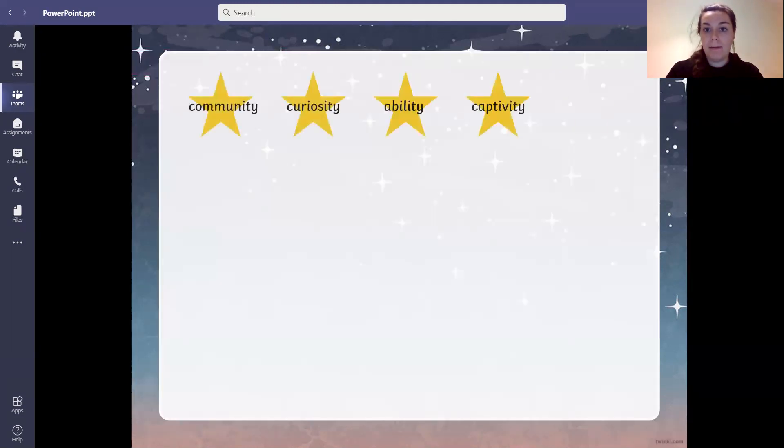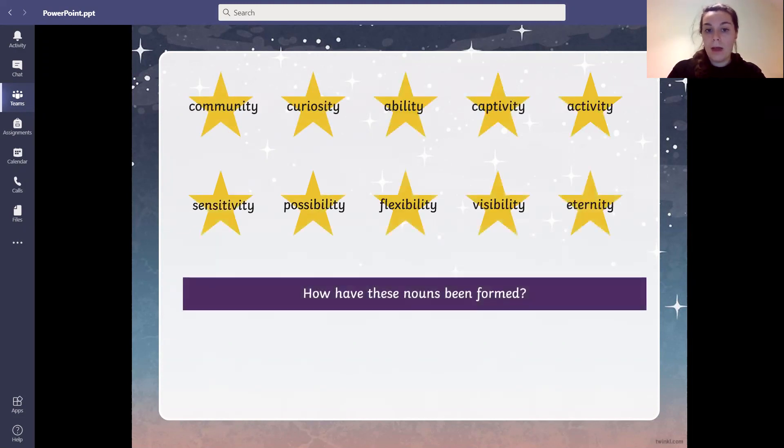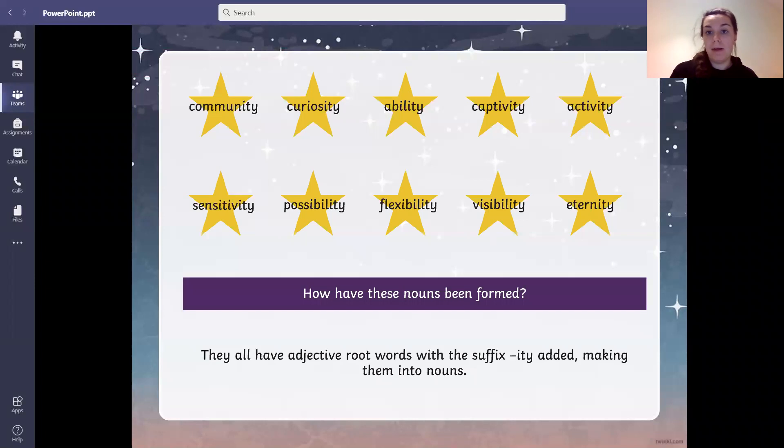Here are our spelling words. How have these nouns been formed? Well, we have added the -ity suffix, making them into nouns. They used to be adjectives: curious as an adjective, able as an adjective, active as an adjective, sensitive as an adjective, and we put the -ity on the end to make it a noun. An activity is a thing, being active is an adjective.